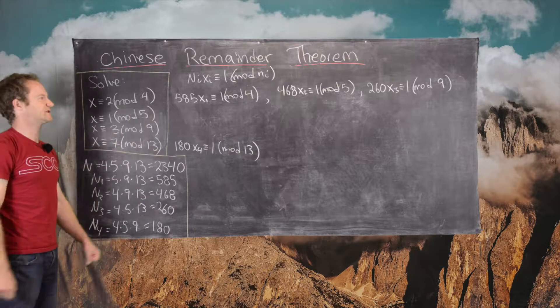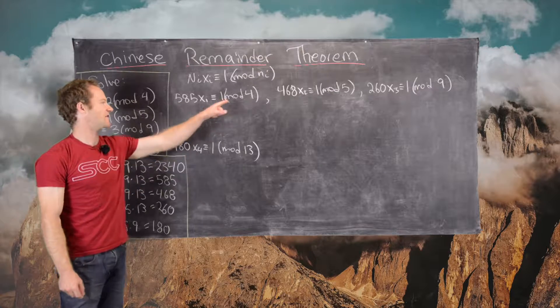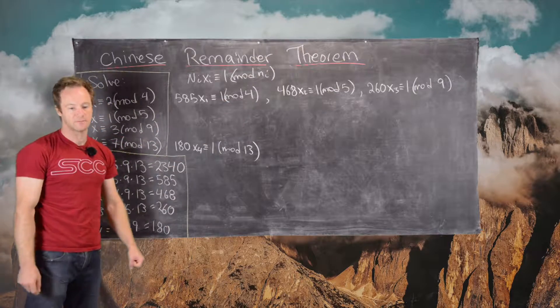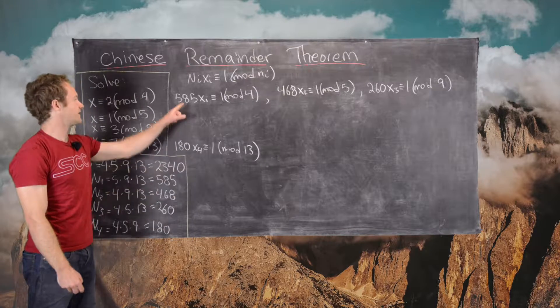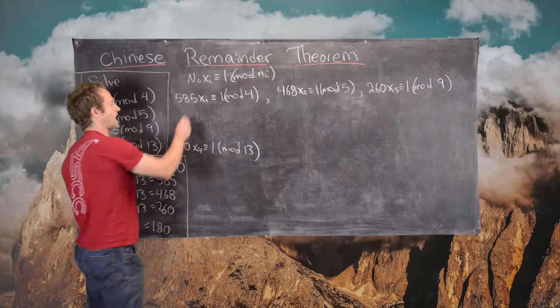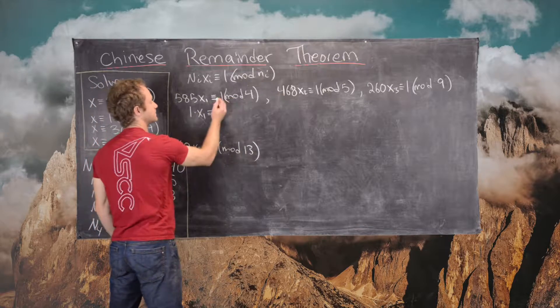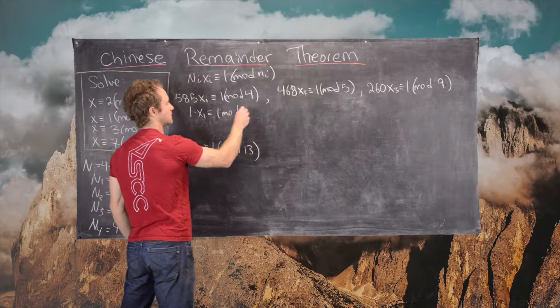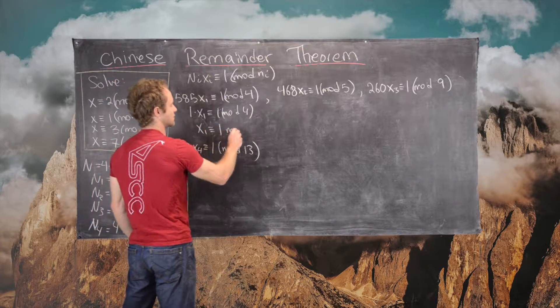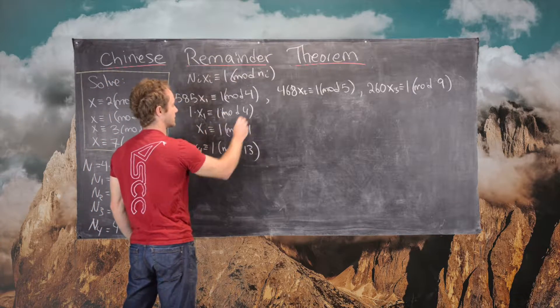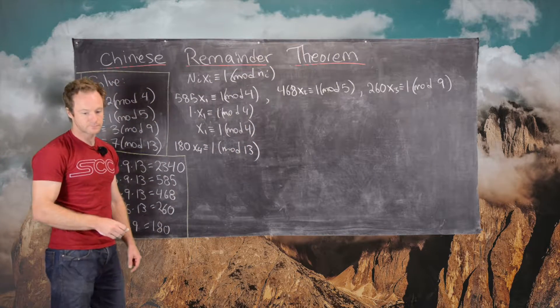We can do some simplification beforehand by reducing each coefficient modulo its corresponding modulus. The great thing here is that 585 is already 1 mod 4, so our solution is X1 congruent to 1 mod 4. We can take X1 equal to 1.